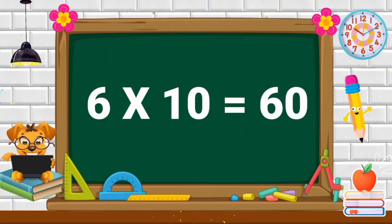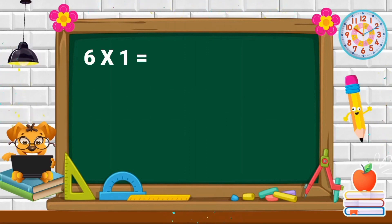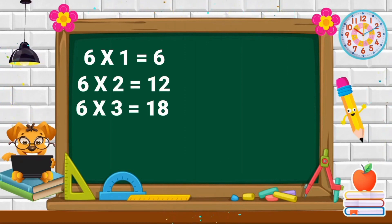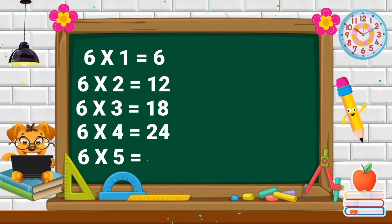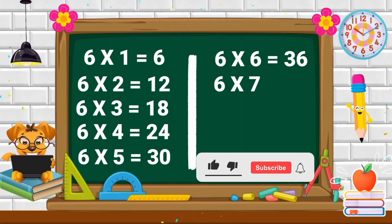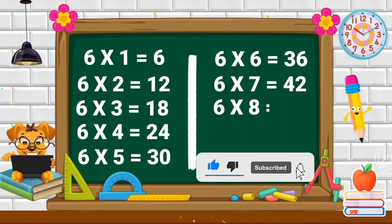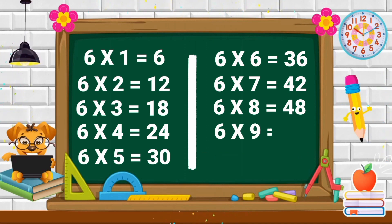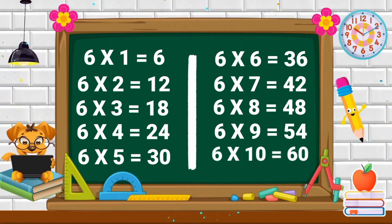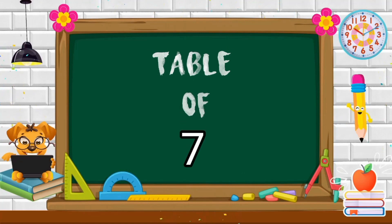6 tens are 60. Repeat again. 6 ones are 6. 6 twos are 12. 6 threes are 18. 6 fours are 24. 6 tens are 60.